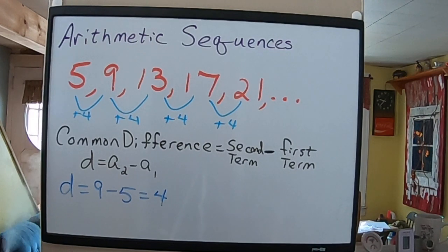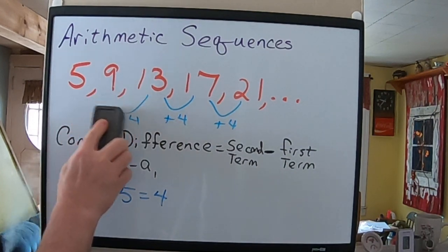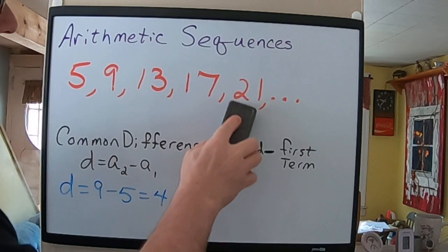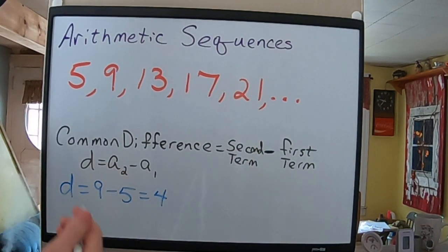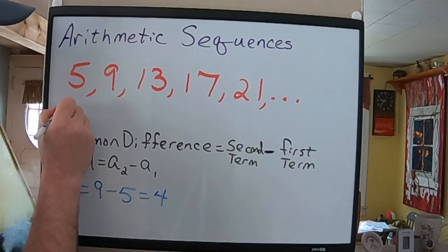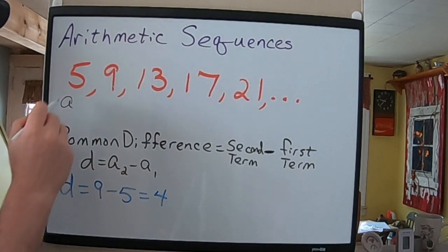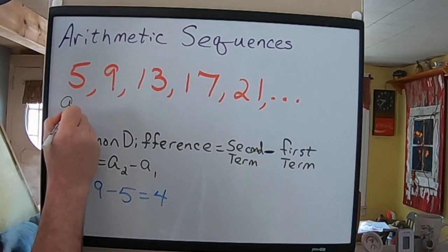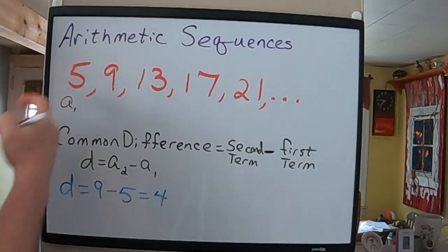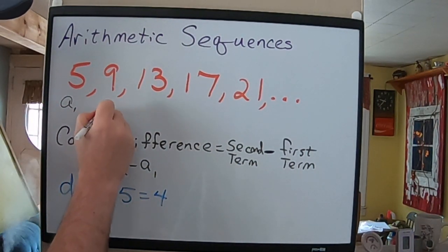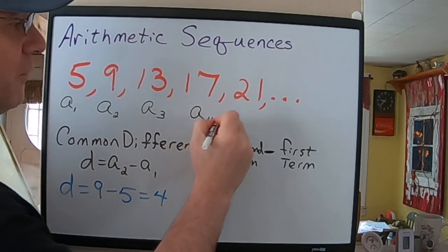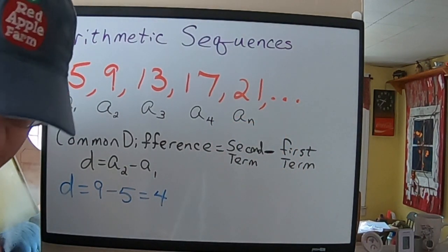Now, there's something special else you need to know about this, and that is there's a special way that they name these terms, and they name them with the letter A for some reason, and they put A, and then instead of an exponent, they do something called a subscript. So, they say sub, and then the number of the term. This is the first term. So, A sub 1, A sub 2, A sub 3, A sub 4, A sub 5.